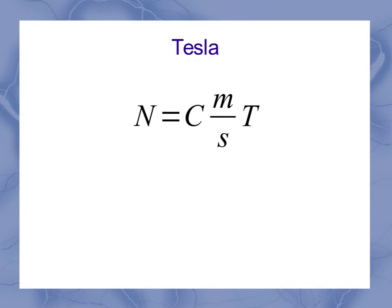To understand a little bit more about the Tesla, let's look at this equation in its entirety. So I know that Newtons over on the left-hand side has to be equal to the product of Coulombs times meters per second times a Tesla.